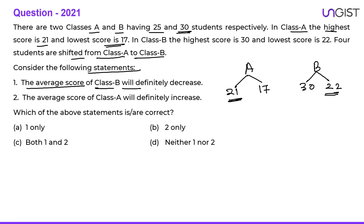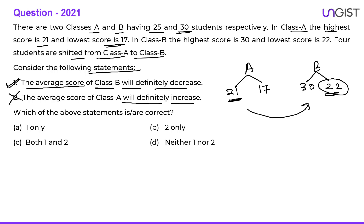Statement one: the average score of class B will definitely decrease. This is correct because in class B the least score is 22, and even the top four candidates from class A coming to class B will be less than the last student of class B, so average of class B definitely decreases. Statement two: the average score of class A will definitely increase — nothing can be said, because we don't know which four candidates are leaving. If the last four go, average increases; if the top four go, average decreases. So only the first statement is correct.